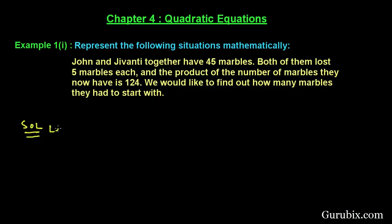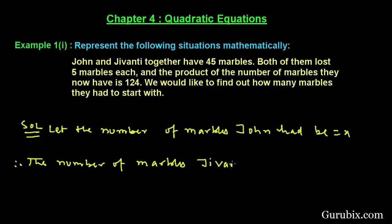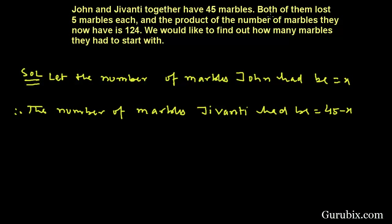First of all, we shall let the number of marbles John had be x. Therefore, the number of marbles Jivanti had will be 45 minus x, because together they have 45 marbles. So if John had x marbles, then Jivanti will have 45 minus x marbles.